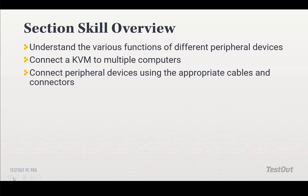These are going to be the main things we're looking at. We're going to take a look at the various functions of different peripheral devices, as well as connect a KVM to multiple computers, and connect peripheral devices using the appropriate cables and connectors. Peripheral devices can be as simple as a USB keyboard, or very complex as a security system with cameras, motion sensors, and biometric devices. Some peripherals are required for a computer to function properly; others are used to expand the functionality of the computer. Our peripherals are going to be divided into three areas.